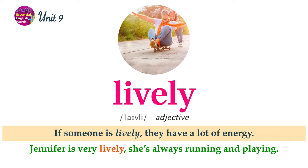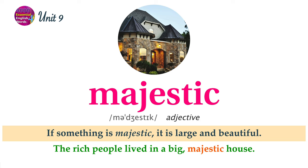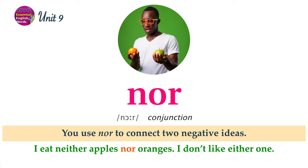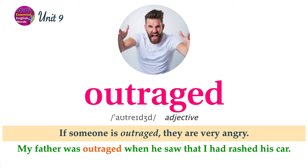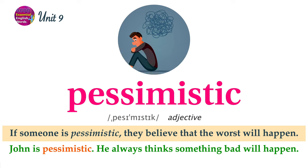If someone is lively, they have a lot of energy. Jennifer is very lively. She's always running and playing. If something is majestic, it is large and beautiful. The rich people lived in a big majestic house. You use nor to connect two negative ideas. I eat neither apples nor oranges. I don't like either one. If someone is outraged, they are very angry. My father was outraged when he saw that I'd crashed his car.